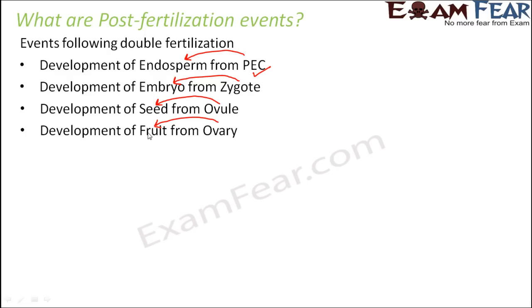Once flowers start appearing, it means the reproductive organs have started to develop. Once fertilization also takes place, the flowers go off and are replaced by the fruit. Fruit is nothing but the ovary of the flower — the ripened ovary is the fruit. Inside the fruit you have seeds, and those seeds are capable of giving rise to a new plant, because inside the seed you have the embryo and the endosperm. The embryo gets nourishment from the endosperm and can grow into a new plant.